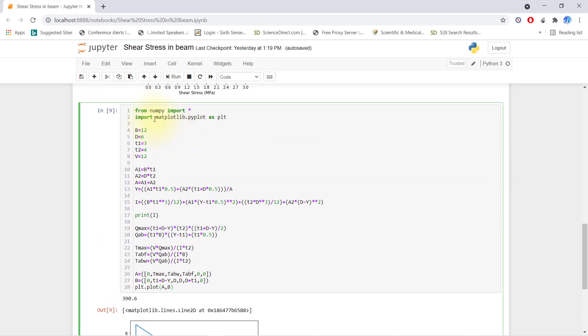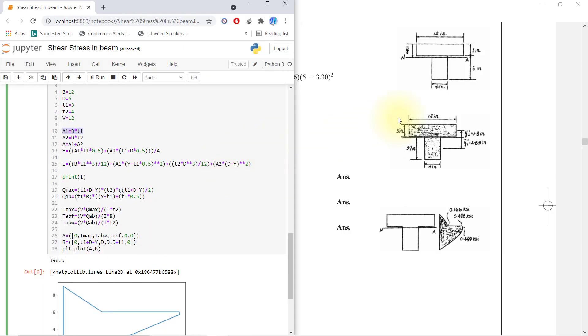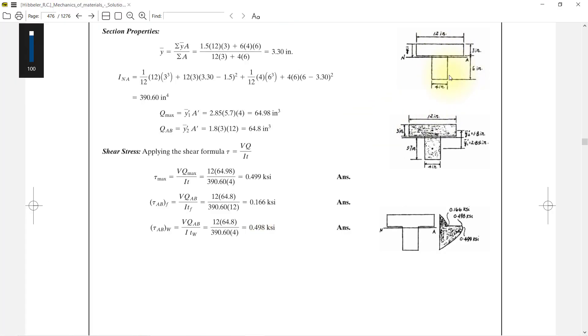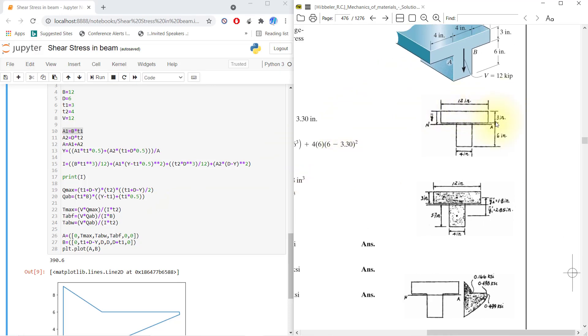Now we will plot this function in Python. I already wrote it, you can see that I imported numpy, imported matplotlib library. B value, d value, t1, t2, and V value. V means this force. Our area is a1 = b1 multiply by t1.